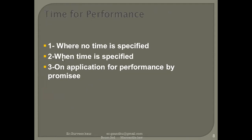Regarding the time of performance, there are three conditions: when no time is specified, when time is specified, and on application by the promisee. When no time is specified, it will be considered to have expired after some time. When time is specified — say one month, meaning till 30th September — performance must happen by that date; after 30th September it will not be a valid contract. On application by the promisee, a written application can extend the time — for example, requesting 30th October instead of 30th September.